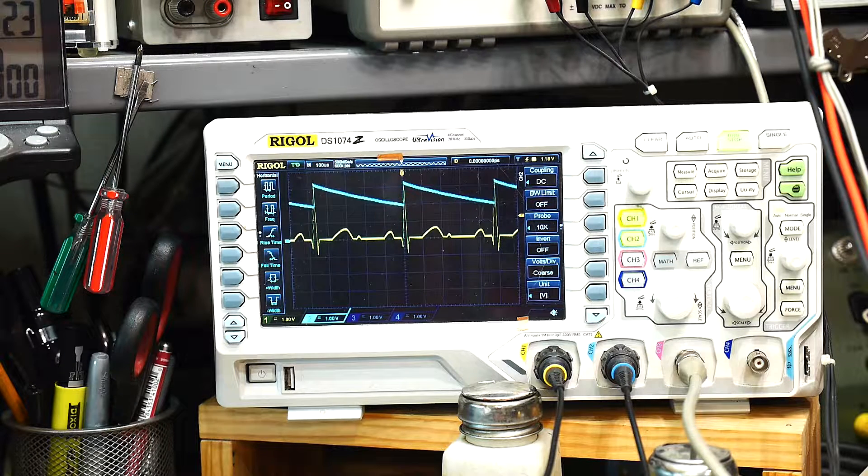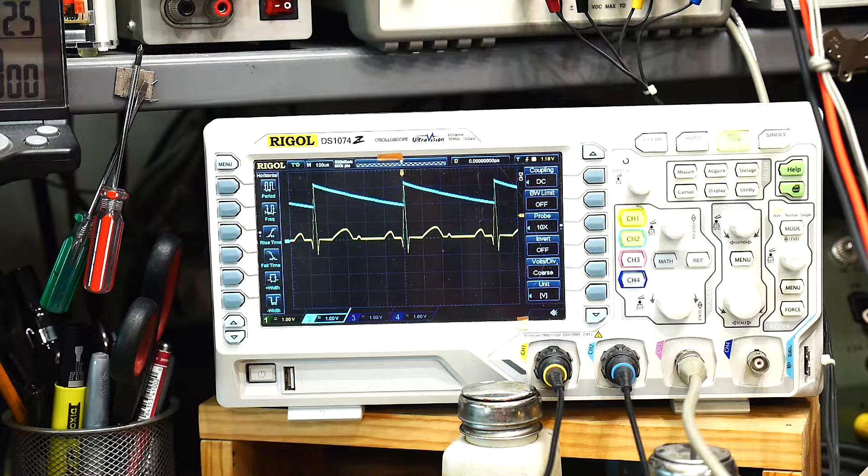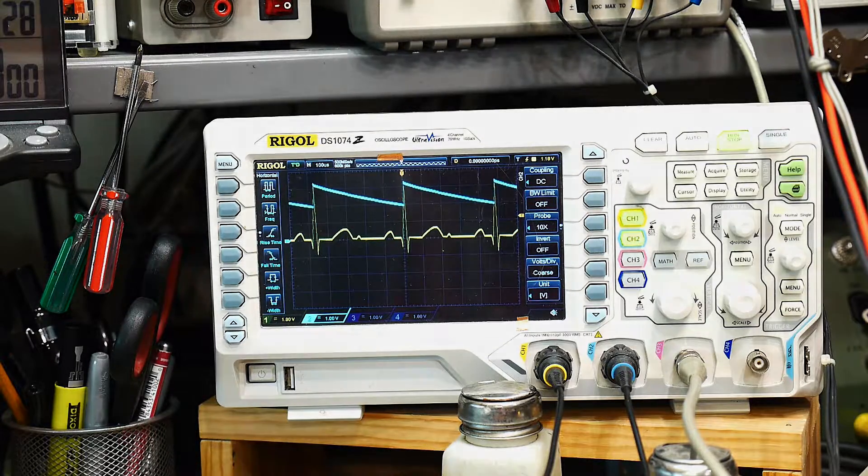So that's how to use feedback to get rid of distortion or to get rid of any voltage drop that may be in the circuit.